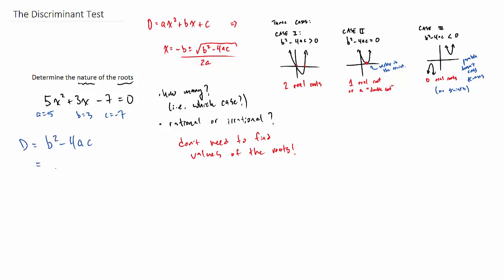So we will plug it into the discriminant formula b squared minus 4ac, and in this case we end up with, let's see, 9 minus negative 140, that's positive 149, so it's definitely case 1 because it's a positive discriminant. So we know there's going to be two real roots.